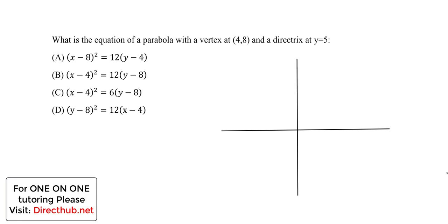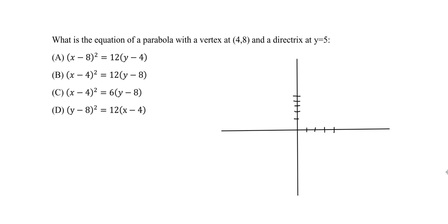And we are told that the vertex is at 4 comma 8. So I'm going to go 4 to the right, up 8. 1, 2, 3, 4... 1, 2, 3, 4, 5, 6, 7, 8. So we're going to be somewhere here. This is our vertex. I'll call it v. That's my vertex point given here. And this is going to be my h, this is going to be my k point.